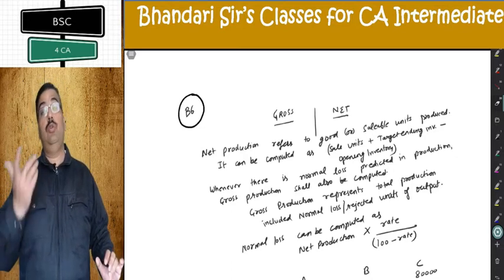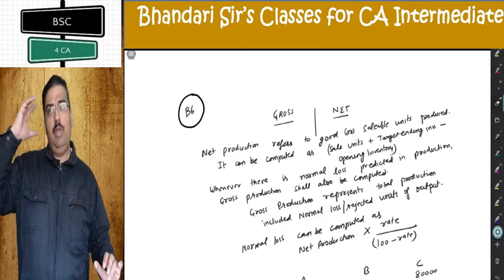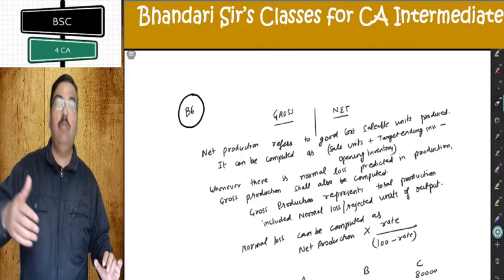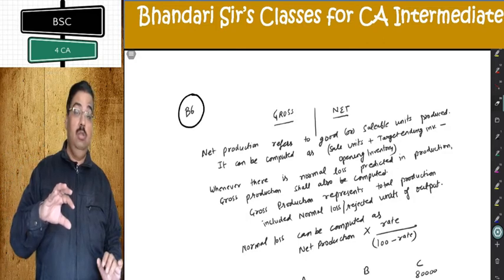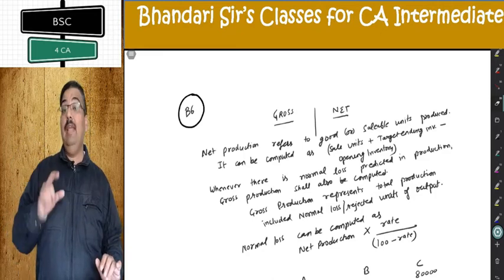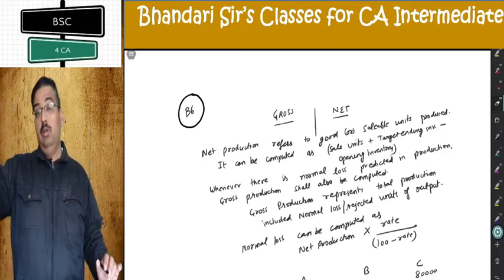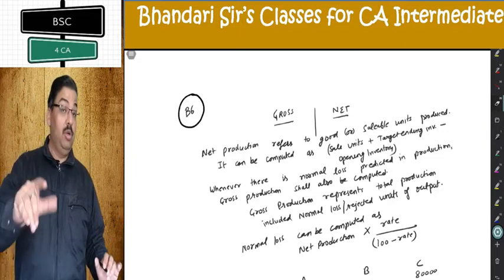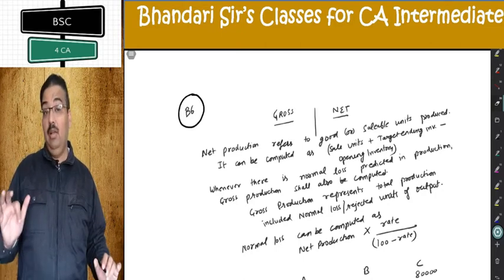Net production means good units of output. Normal production budget gives me net production: sale + target ending inventory − opening inventory = net production. Gross production is obtained by adding normal loss to net production. Formula for normal loss: net production × rate ÷ (100 − rate). Gross minus loss equals net — so gross equals net plus loss.